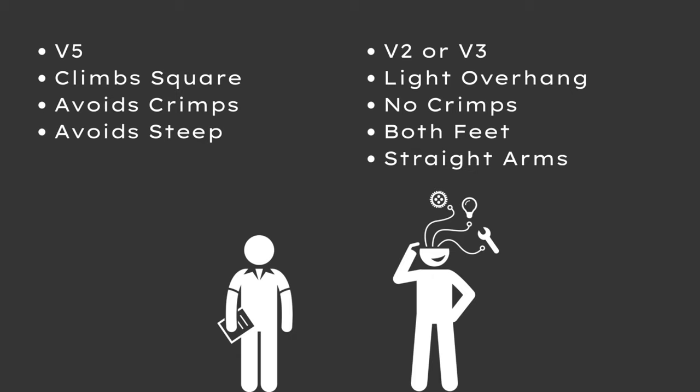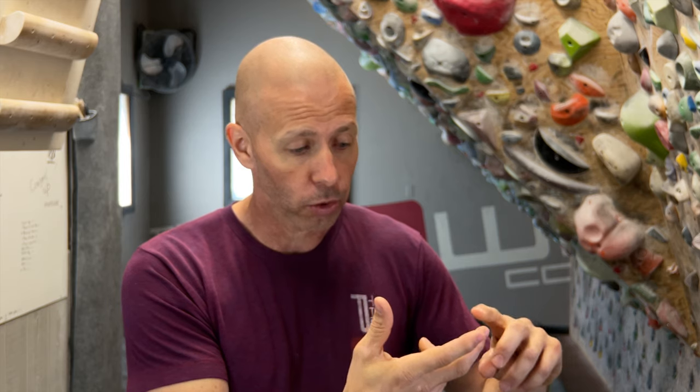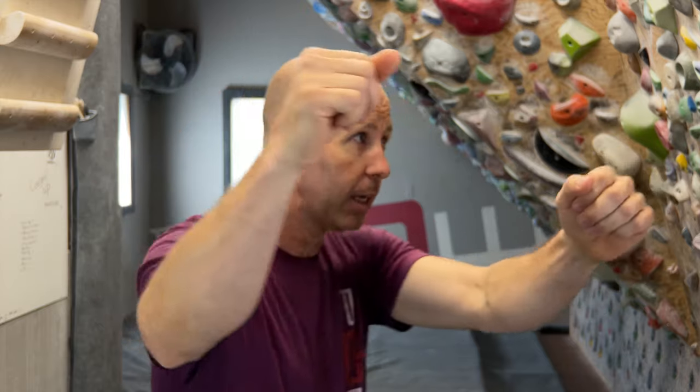Those constraints take out of play the typical sequence of stepping to a high foot, rocking over, staying square, locking off, and reaching. The climber has to explore the solution space without being in chaos — the grade, hold type, and angle are all comfortable. They'll figure out: if I put both feet on here and keep my arms straight, I need to turn my hip — and suddenly they're in a drop knee. That's way more valuable than a prescriptive, unique situation they may never encounter again.